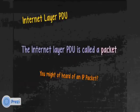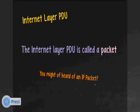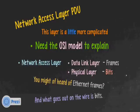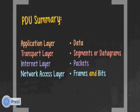The internet layer PDU is called a packet — you've probably heard of an IP packet — so when we talk about a packet, we know we're talking about the internet layer. The network access layer PDU is a bit more complicated: it maps to the data link layer and the physical layer. At the data link layer it deals with frames — you may have heard of Ethernet frames. At the physical layer, we're sending out bits, so what goes out on the wire is bits. Summary: application layer is data, transport layer is segments for TCP or datagrams for UDP, internet layer is packets, network access layer is frames and bits.